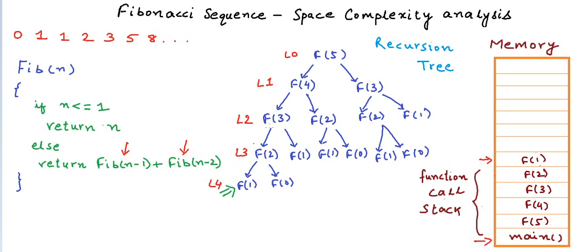So the maximum depth in this case is the path from l0 to l4, which is 4 units in this case. And the number of function calls in this path is 5 units. Sorry, the number of function calls is 5, and the maximum memory consumed is 5 units. If we would have called the function fib for any generic value n, then the maximum depth of the recursion tree would have been n-1 units, and the maximum space taken would have been n units.